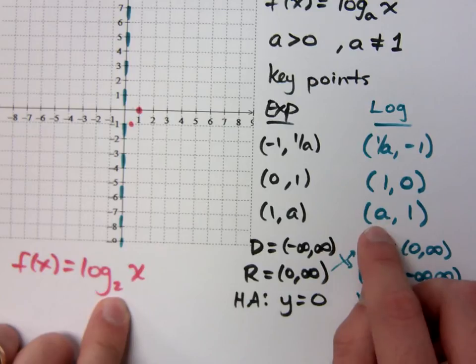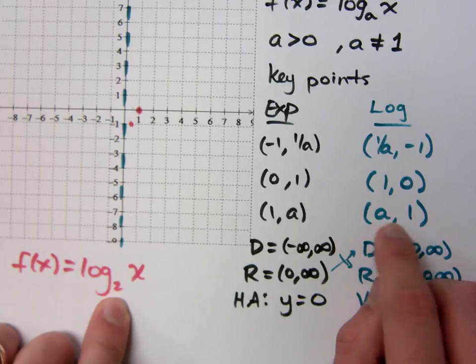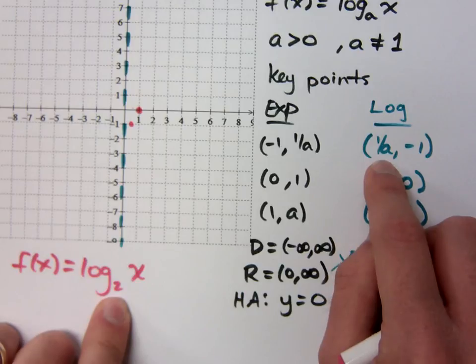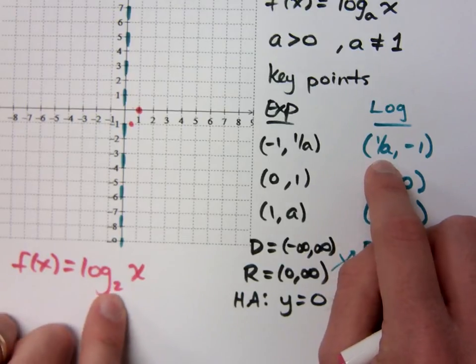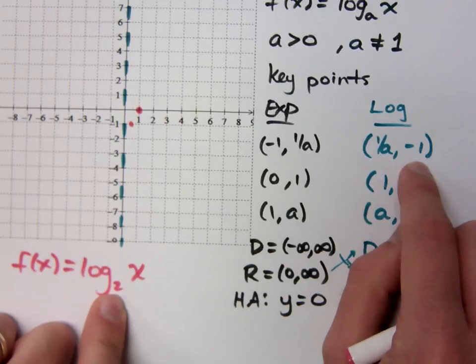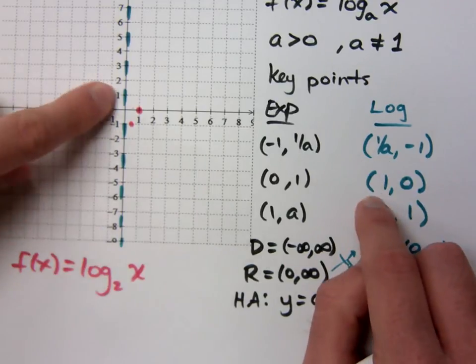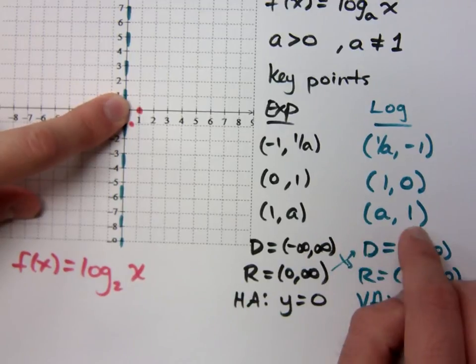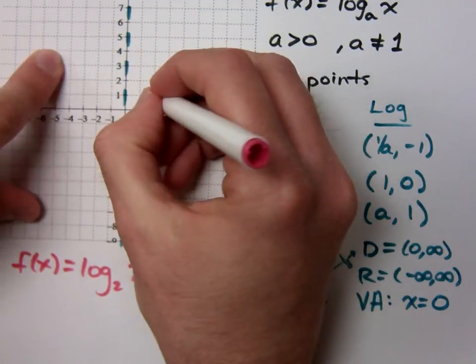Wait, 2, 1. Do that again? My base comma 1. No, no, start with 1 over a. It's 1 half, the 1 over a. My base is 2. So it means I have the point 1 divided by 2 or 1 half comma negative 1. I have the point 1, 0. And I have the point A, 1. So that's 2, 1.